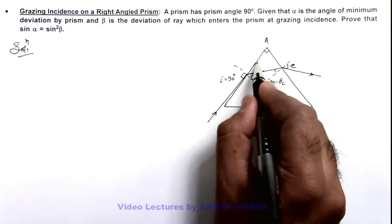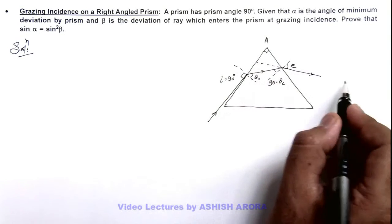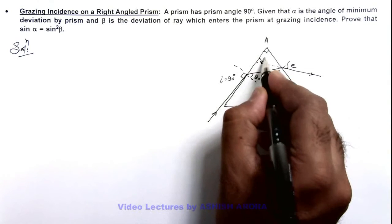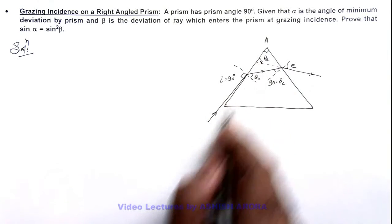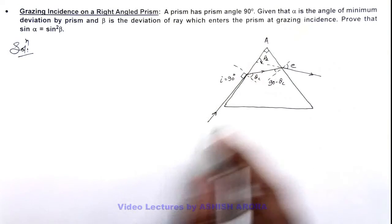And we are given that this light finally going at an angle of deviation beta. Here beta is the deviation angle from the original direction of the light ray.